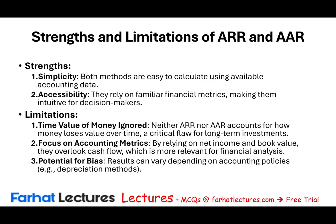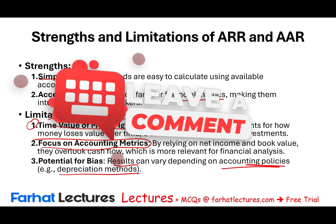Let's look at their strengths and limitations. Their strength is simplicity — they're both easy to compute and rely on similar financial metrics like net income and book value. Their limitations: first, the time value of money is ignored. Second, they focus on accounting metrics rather than cash flow. Accounting figures come from accrual — revenue is accrual, depreciation is a non-cash expense, bad debt expense is non-cash, and reserves can be manipulated to alter net income. Results can vary depending on accounting policies such as depreciation method and inventory method, and this is the biggest weakness of both methods.